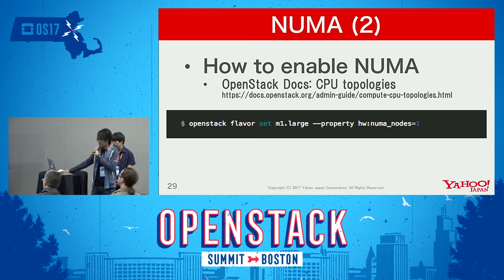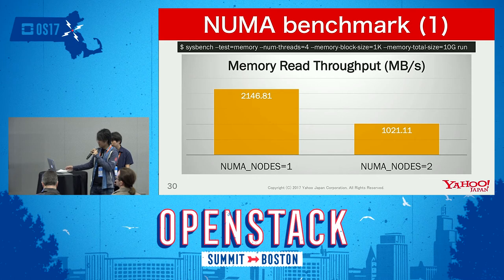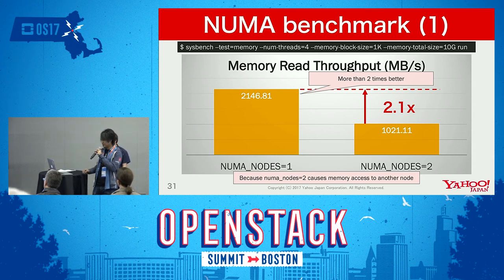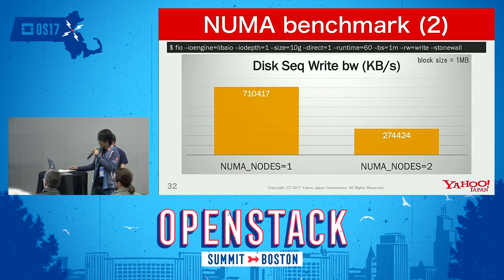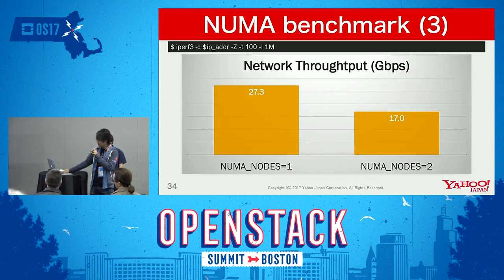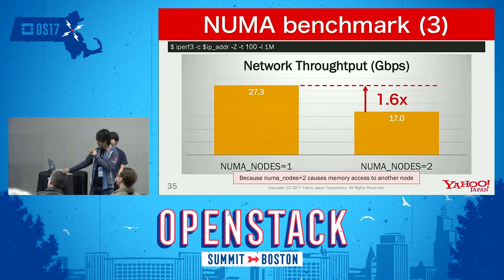Let's see the benchmark results. This is the result of memory read throughput. With NUMA nodes 1 versus 2, there is a performance difference of more than two times. This is because in the case of NUMA nodes 2, memory access to another node has occurred. The sequential write result also shows a performance difference of more than two times. Network throughput is also better when setting NUMA nodes 1.